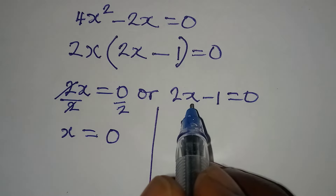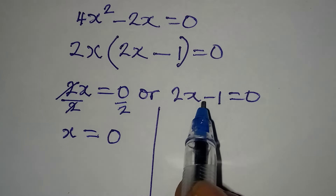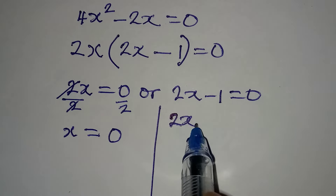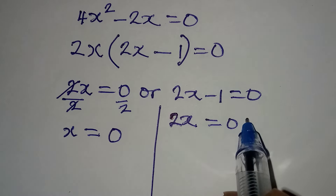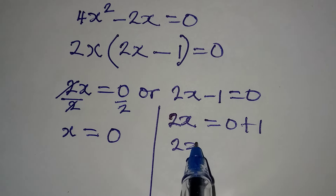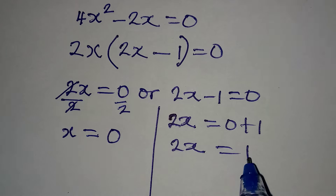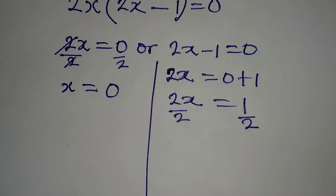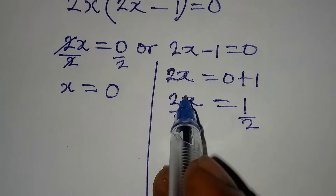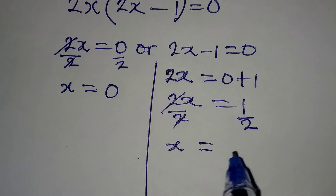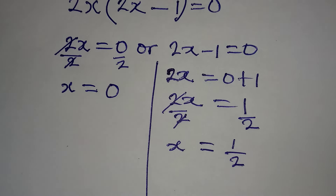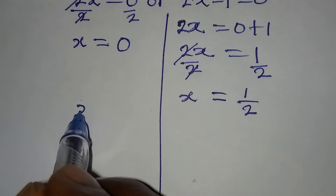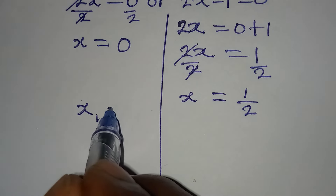From the second factor, we make 2x the subject: 2x equals 0 plus 1, so 2x equals 1. Dividing both sides by 2 gives x equals 1 over 2.